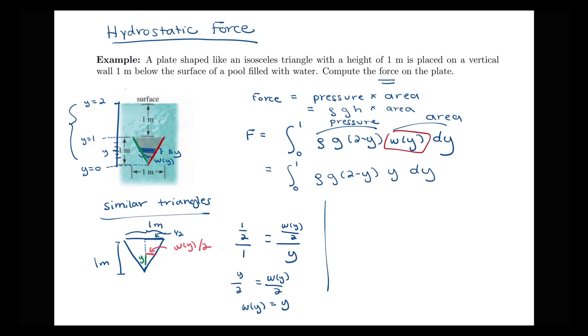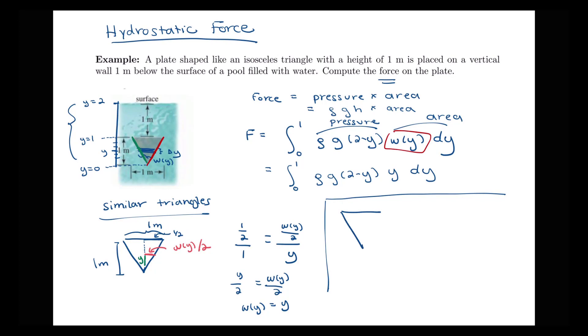So let's look at the other way we could have found what this w(y) is equal to, and that would be by placing our plate here on a set of x and y coordinates. So I'd let this tip here be the origin, which means that this upper right corner of the plate would have the coordinates of one half comma one, and the point over here then would be negative one half comma one.